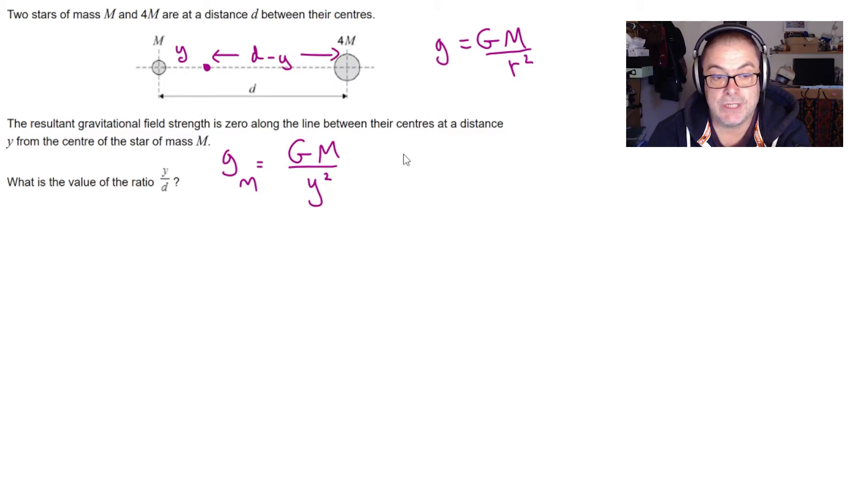Then we'll do a similar thing for the big star, i.e. g_4m, and that is going to be equal to 4 g m over d minus y squared. So now we're in a position where we have both the field strength formulas, and so we know that g_m is equal to g_4m.